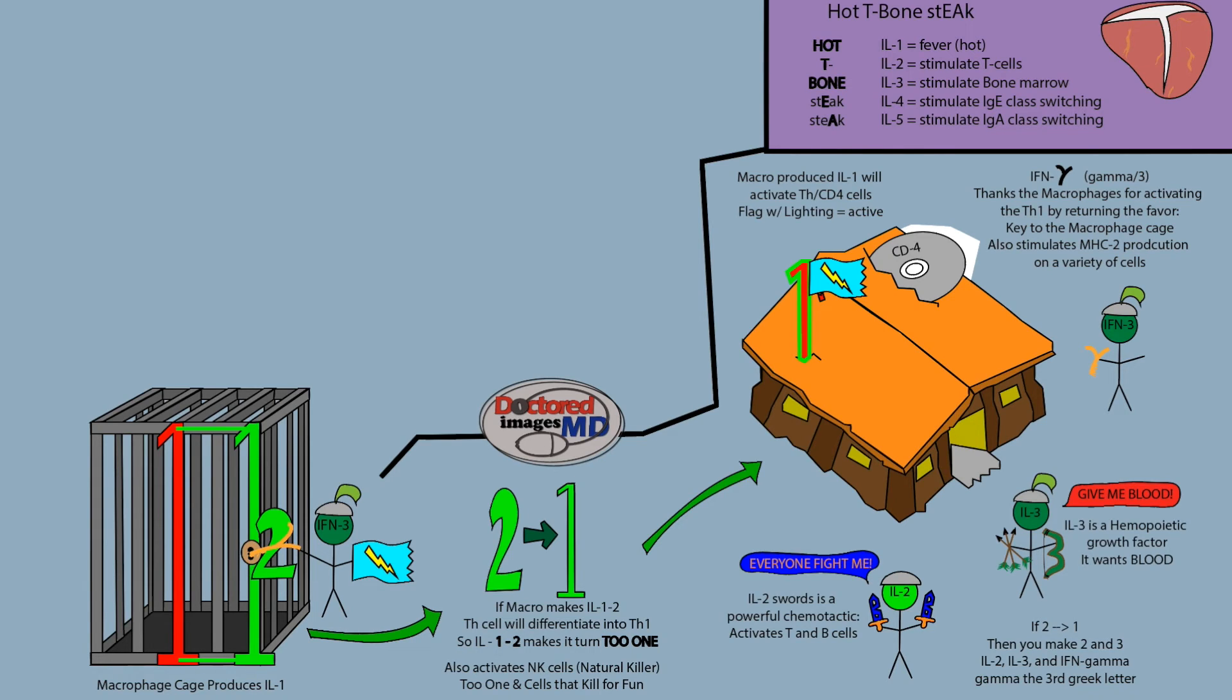You'll notice that he's unlocking it at the IL-12. That's because IL-12 activated the TH-1, which produced IFN-gamma, which can then return and activate the macrophage itself. IFN-gamma can also stimulate MHC-2 production in a variety of cells.